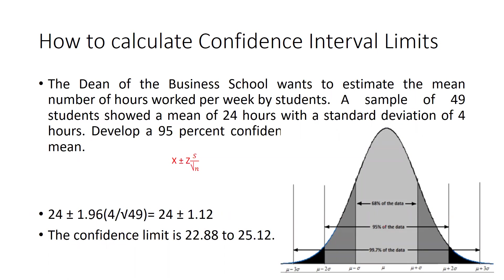With the help of this bell-shaped normally distributed curve, we can see three areas: 68 percent of the data falls within plus and minus one standard deviation, 95 percent within mu plus or minus two sigma, and 99.7 percent within mu plus or minus three sigma.